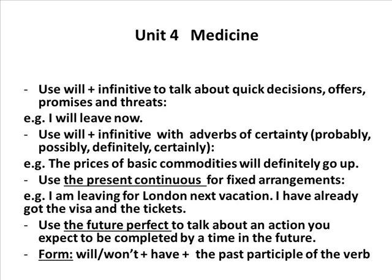Now we have the present continuous for the future. We use this for fixed or pre-arranged plans. For example, 'I'm leaving for London next vacation' means I have already made the arrangement — I have already obtained the visa and the tickets. This is called a pre-arrangement or fixed arrangement.